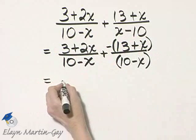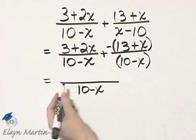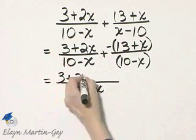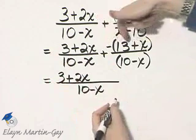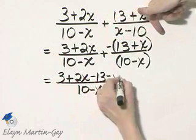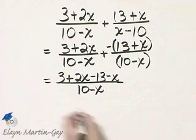So now that the denominators are exactly the same, I have the right of making it numerator. Now let's go ahead and take off parentheses, and then it's going to be minus 13 minus x. Be very, very careful with that. And let's go ahead and simplify that then.